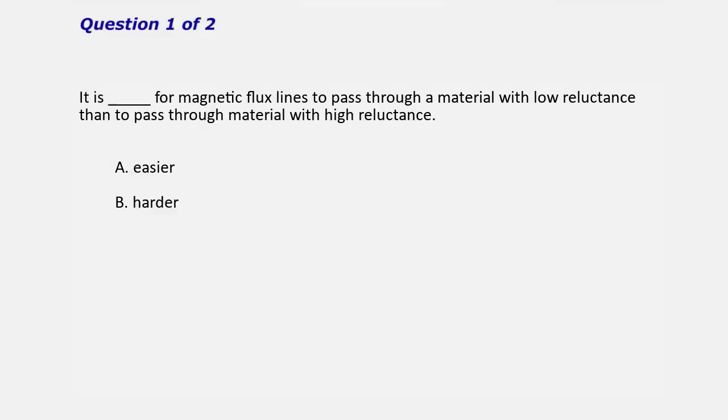Question 1. It is blank for magnetic flux lines to pass through a material with low reluctance than to pass through material with high reluctance. The answer is A, easier.